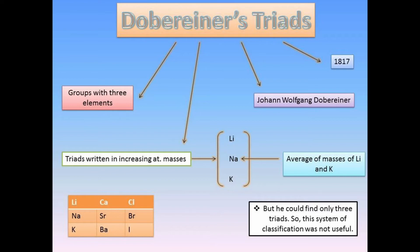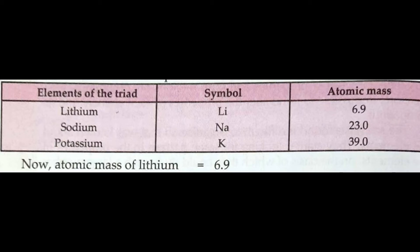For example, Döbereiner grouped lithium, sodium, and potassium in a family called alkali metals, forming a Döbereiner triad in which sodium is the middle element between lithium and potassium. The atomic mass of sodium is equal to the average of atomic masses of lithium and potassium. In this triad, all elements have similar properties — they all have a valence of one and react with water to form basic solutions called alkali.